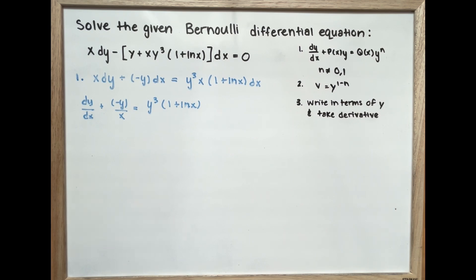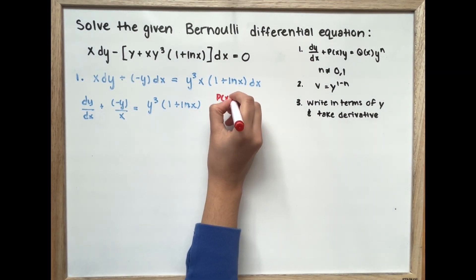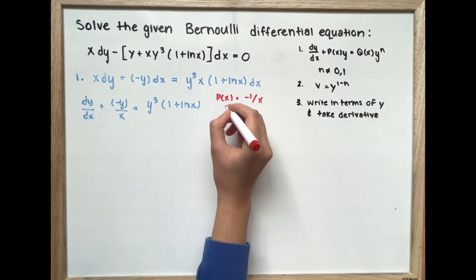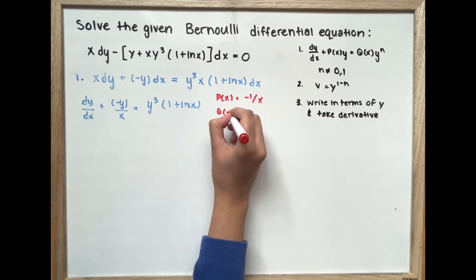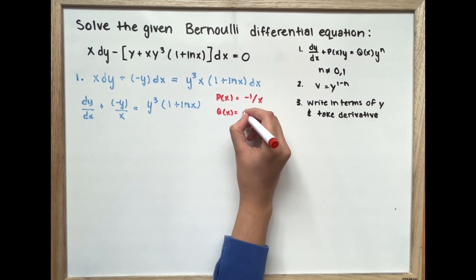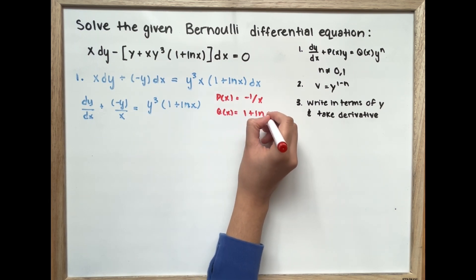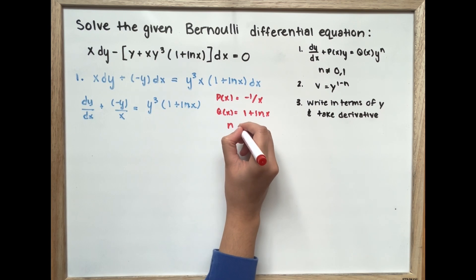Now we can set our P(x) equal to negative 1 over x, our Q(x) equal to 1 plus ln of x, and our n equal to 3.